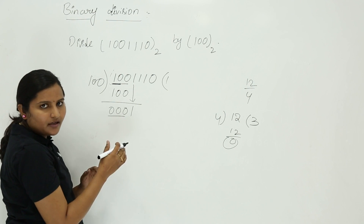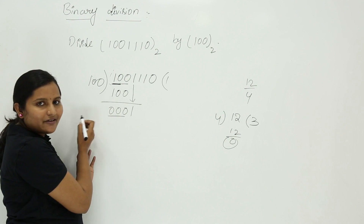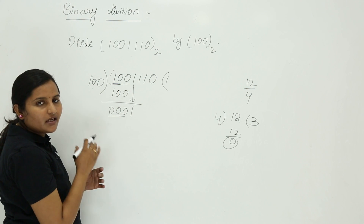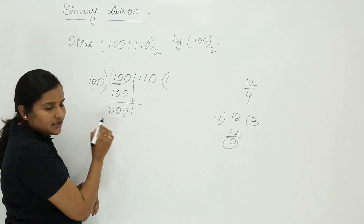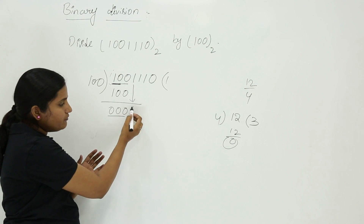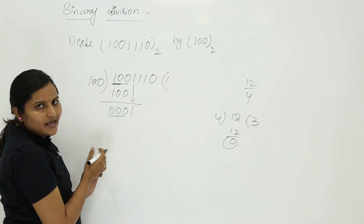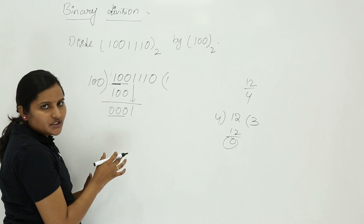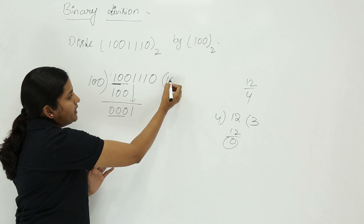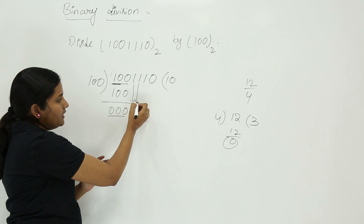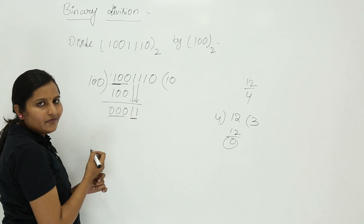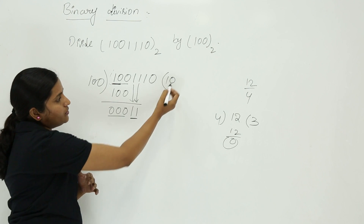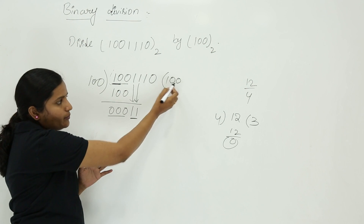You can neglect leading zeros on the left — they do not change the value. Adding zeros to the right of one changes the place value, but adding zeros to the left does not. After neglecting those three zeros you are left with one, which is again less than four. So you need another bit, but you can only take one bit at a time — put zero in the quotient and bring down the next bit. Now you have one one, which is three, but three is still less than four, so put zero again and bring down another bit.